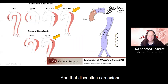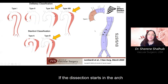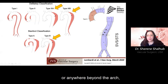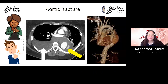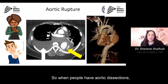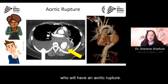A type A dissection can extend along the entire length of the aorta. If the dissection starts in the arch or anywhere beyond the arch, that is a type B aortic dissection, which can also extend along the entire aorta. This can present with rupture — a proportion of people with aortic dissections will have an aortic rupture.